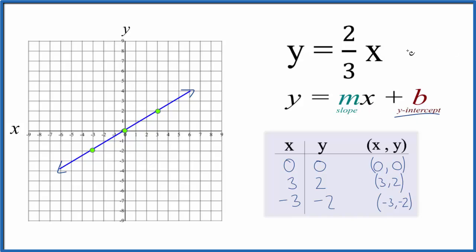b is the y-intercept. There isn't anything here. We could think of this as 2/3 x plus 0. And then our y-intercept would be 0. So we'd cross the y-axis at 0. So that makes sense.